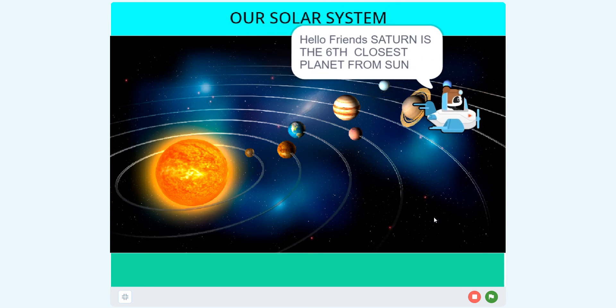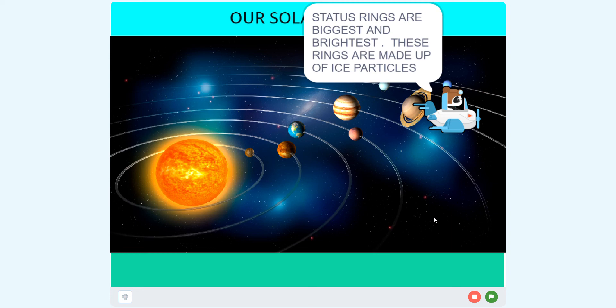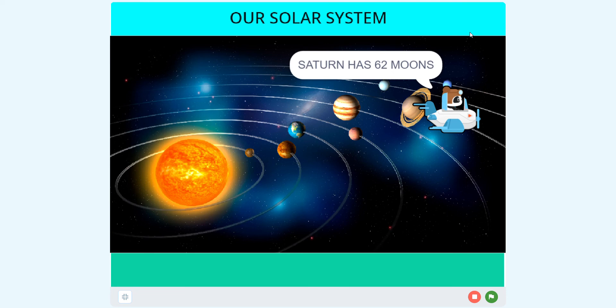Saturn is the sixth closest planet from the Sun. Saturn's rings are biggest and brightest. These rings are made up of ice particles. Saturn has 62 moons.